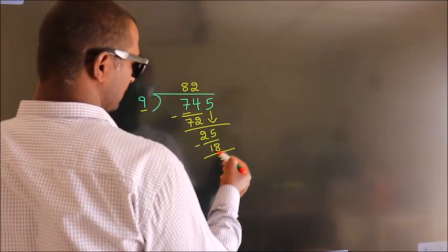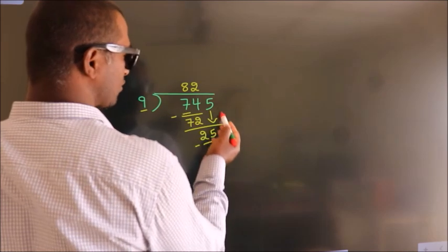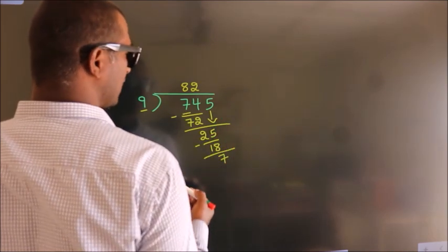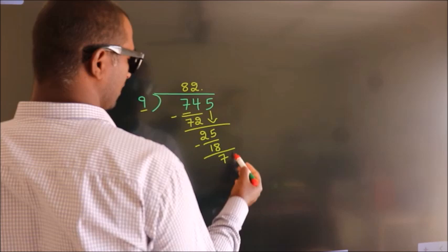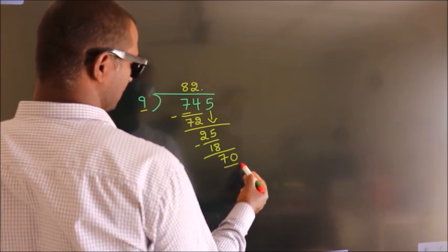After this, no more numbers to bring it down. So what we do is, we put dot, take 0. So 70.